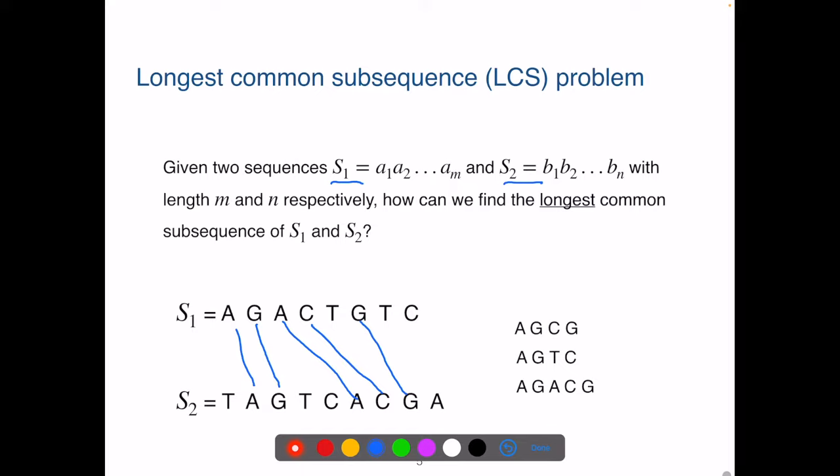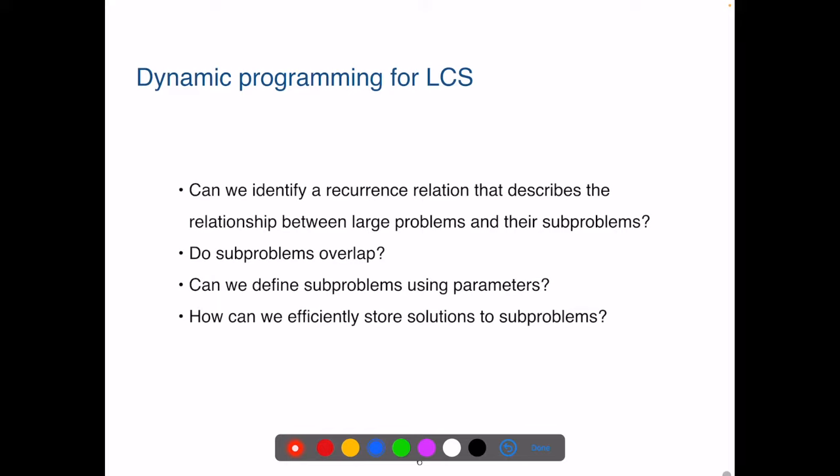As you can see here, we can pair common letters from S1 and S2 using these blue lines. And all the blue lines do not cross, because matched letters must be in the same order in the two sequences. In order to solve LCS using dynamic programming, we follow the fixed steps. And as with any other dynamic programming developments, we ask these questions.